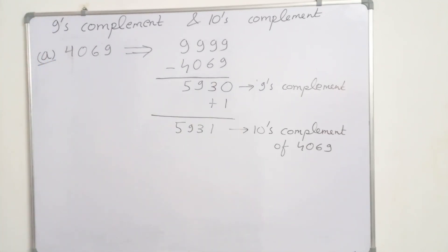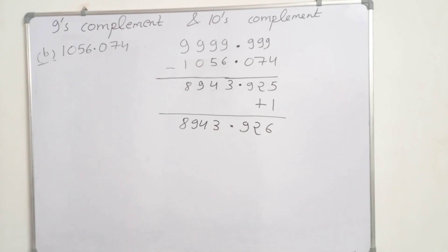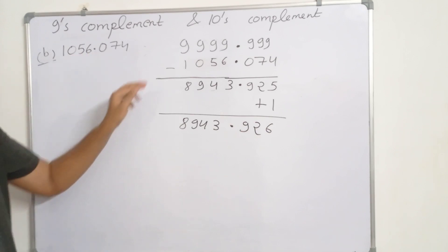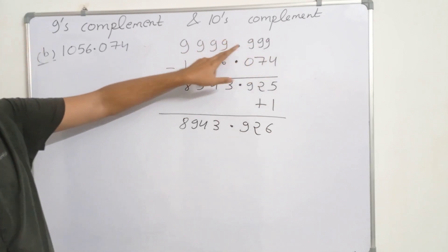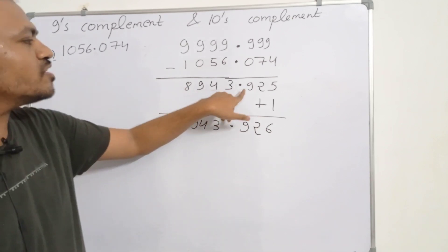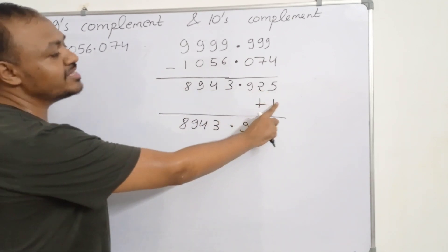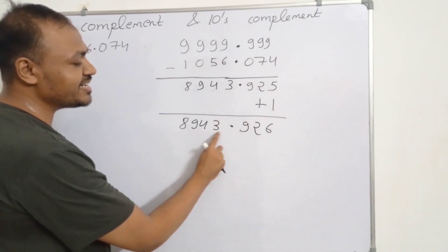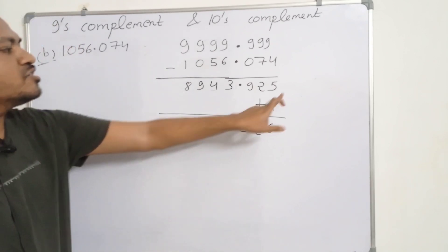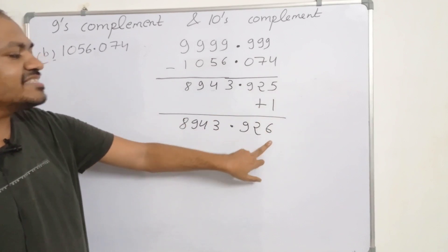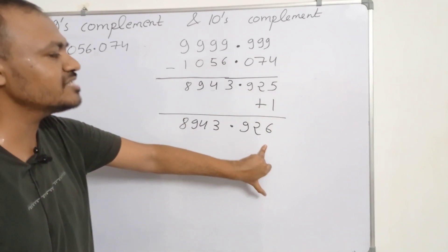Let us take another example. We want to find the 10's complement of 1056.074. Again, first find the 9's complement by subtracting 9 from all the numbers. We get 8943.925. Now add 1. This 1 will be added to the part after the decimal, so we get 8943.926. So 8943.925 is the 9's complement and 8943.926 is the 10's complement of 1056.074.